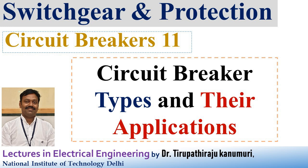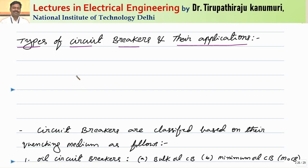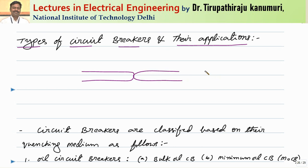Hi all, today we are going to discuss about types of circuit breakers and their applications. We know that the major purpose of a circuit breaker is that under normal conditions both the contacts will be touching each other, so there will be no issue. But whenever a fault happens, the contacts will be separated.